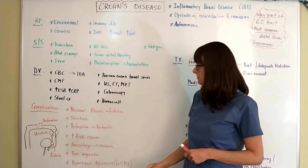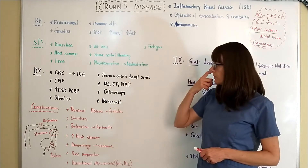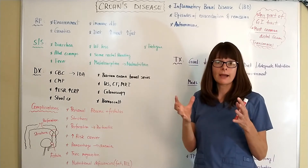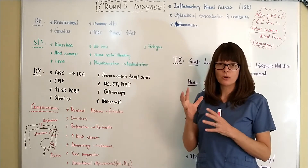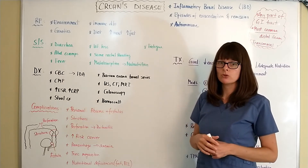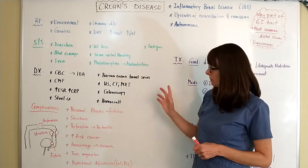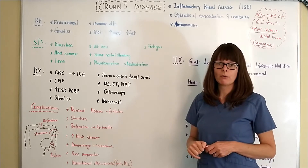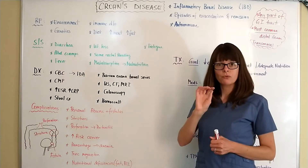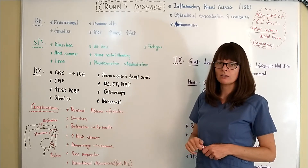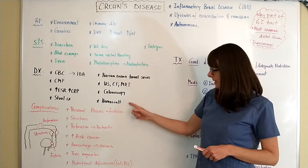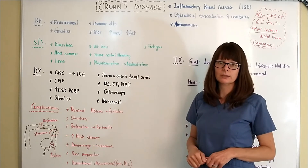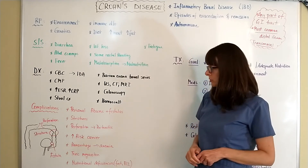There might be a barium enema bowel series, which allows us to highlight areas of the digestive tract and see where the inflammation is located. Patients might also receive ultrasounds, CT scans, and MRIs. A colonoscopy can visualize the inside of the digestive tract, and a hemoccult test can determine if there is active rectal bleeding in patients with Crohn's disease.